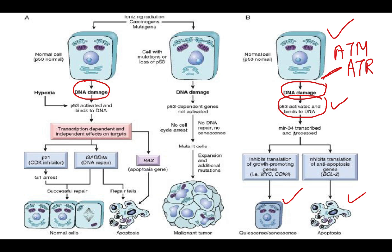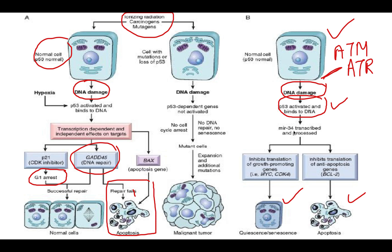When a normal cell is exposed to ionizing radiation, carcinogens, or mutagens, P53 is activated. The cell can either be repaired with the help of the GADD45 gene, or arrested in the G1 phase. If DNA repair fails, apoptosis is triggered — all to prevent the abnormal cell from entering the cell cycle.